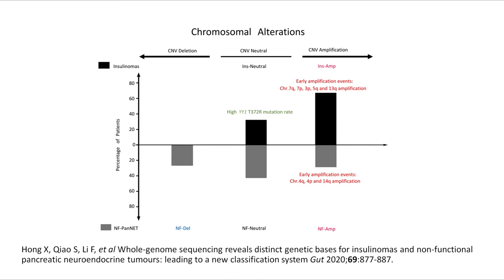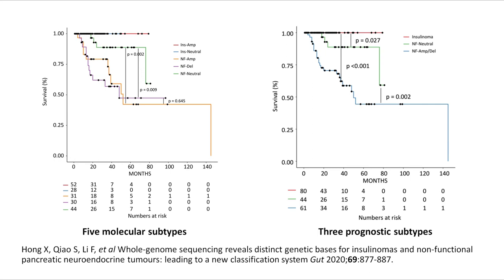The main features are shown in the figure. Insulinoma neutral showed a higher YY1 mutation rate, while insulinoma amplification had nearly no YY1 mutations. Early amplifications preferred different chromosomes between insulinoma and NF amplification. For relapse-free survival, both insulinoma amplification and neutral patients had nearly no relapse events, but NF amplification and NF deletion had significantly worse prognosis than NF neutral.